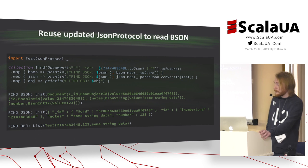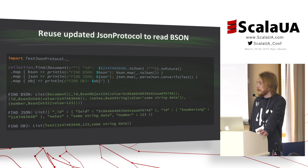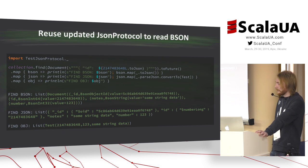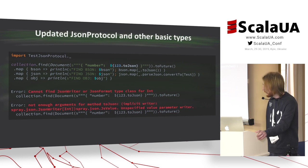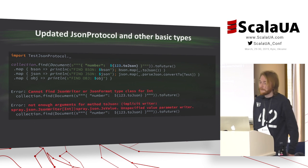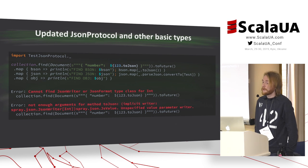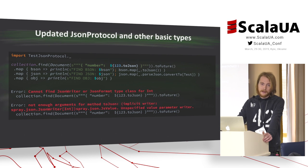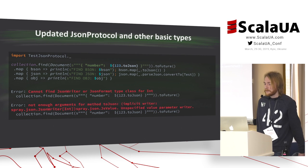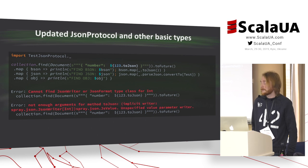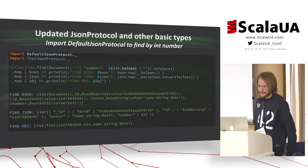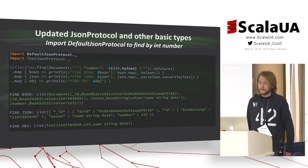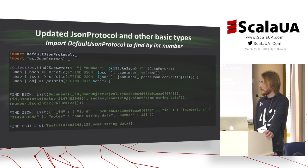The find query uses the updated TestJSON protocol to deserialize BSON that contains a large long field to a TestCaseClass instance. No error is thrown — it works as expected. However, this trick makes it impossible to use the JSON protocol for the rest of the types in our TestJSON protocol. The provided find query will not compile because TestJSON protocol doesn't have a JSON format for int type now. To run a find query by int number, JSON formats from the default JSON protocol should be imported as shown on this slide.